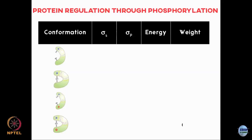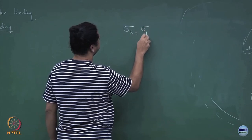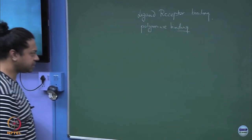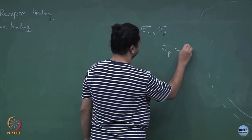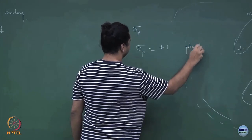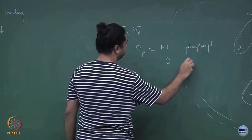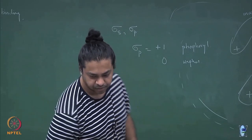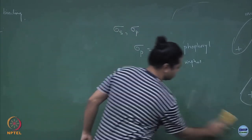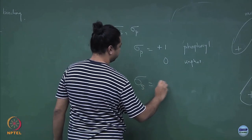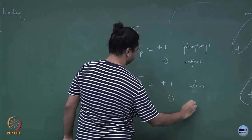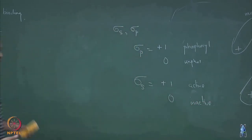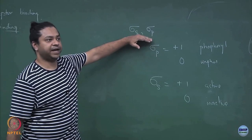To build the model, I need to label the microstates of the system. Earlier I used only one state variable for the ion channel. Now I will use two state variables: sigma_s and sigma_p. Sigma_p tells me whether the protein is phosphorylated or not — sigma_p equals 1 if phosphorylated, 0 if unphosphorylated. Sigma_s denotes the active versus inactive state — sigma_s equals 1 if active, 0 if inactive. Together these two variables specify the microstates of the system.